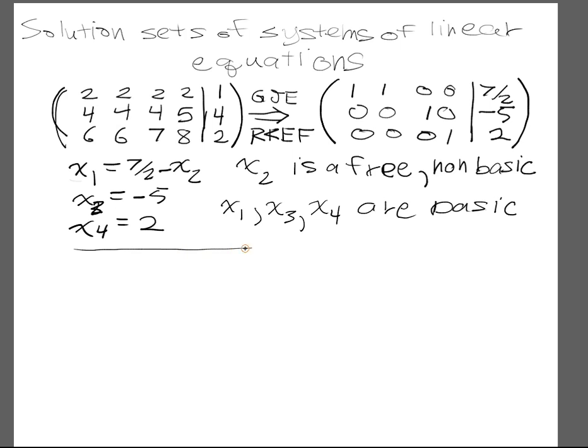That is we can plug anything into it. It's a degree of freedom to our solution set. The other variables are fixed as soon as we fix all the free variables. And they also correspond to columns that have a pivot entry. Columns that we might pivot on. So in this situation x1, x3, and x4 are basic. So this is a system where we have many solutions.